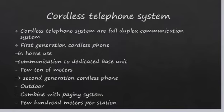Cordless telephone systems have two types: first generation and second generation. First generation is used at home, and second generation is used outdoors.